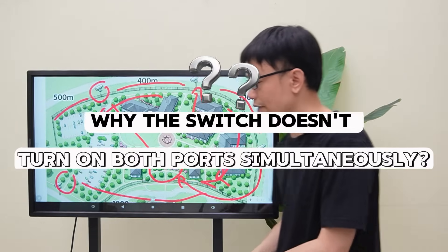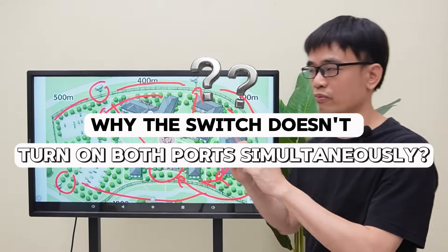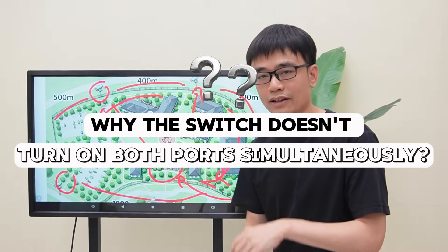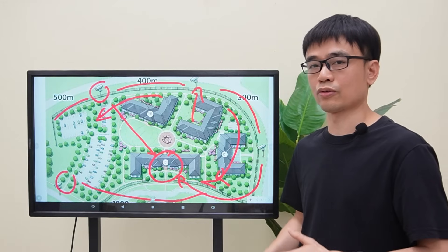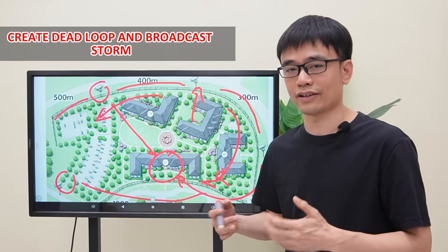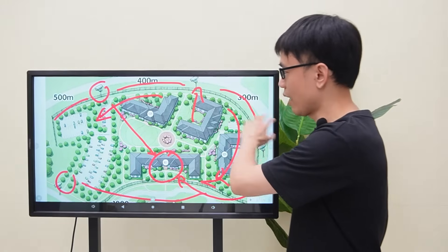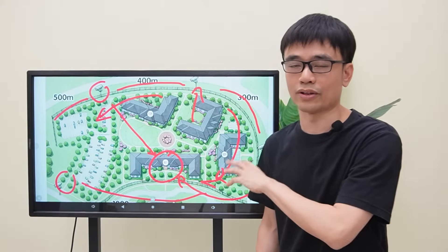You may wonder why the switch doesn't turn on both ports at the same time. This wouldn't work because it would create a data loop and broadcast storm, which would crash the network immediately in this ring network topology.